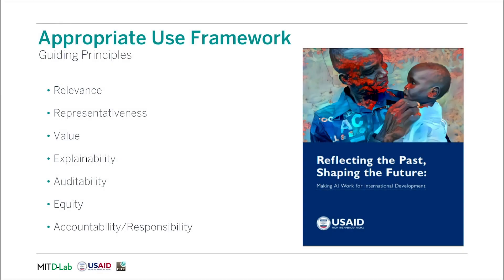The Center for Digital Development at USAID has been studying the appropriate use of machine learning in developing country contexts. Among other activities, this research has involved engaging stakeholders, conducting case studies, and developing and publishing an appropriate use framework. The work done by the MIT team builds on certain aspects of this report, which can be found in the linked materials. In this section, we will be presenting some characteristics for the appropriate application of machine learning. Please keep these characteristics in mind as you think about the projects you are working on. They are intended to help practitioners think through the ethical and appropriate use of machine learning in international development.